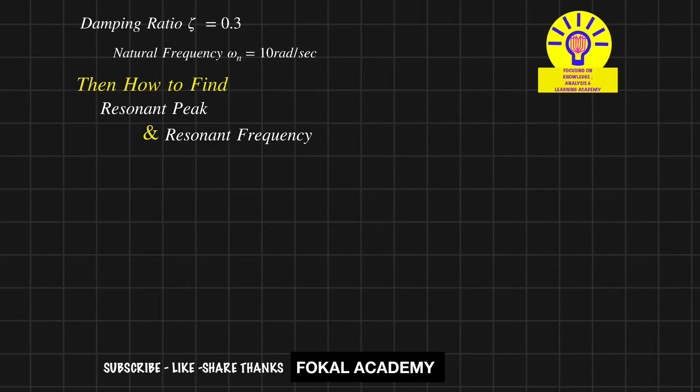Hi dear one, welcome to Focal Academy. In this problem, for a system damping ratio is given as 0.3 and natural frequency is given as 10 radians per second. Then how to find resonant peak and resonant frequency? This is the problem.